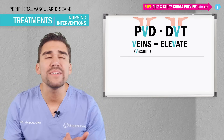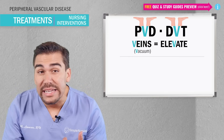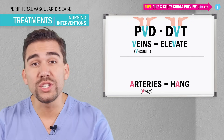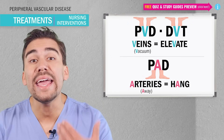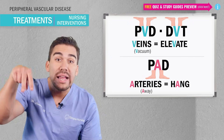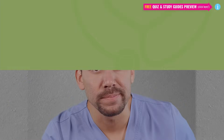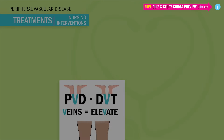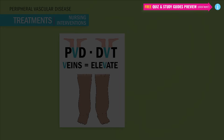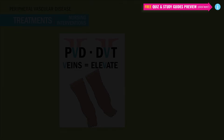And for arteries, you always hang — so for PAD, put the arteries down. I can almost guarantee this next part is going to be on your exam: for PVD, we elevate the legs. V is for elevate.